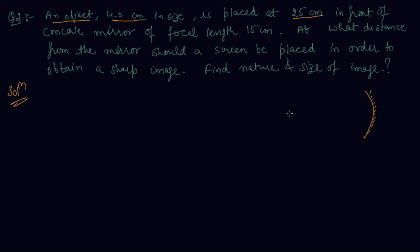The concave mirror has focal length of 15 centimeters and the object is placed between the focal length and center of curvature. At what distance from the mirror should a screen be placed to obtain a sharp image? U is negative 25 centimeters, H is 4 centimeters, and F is minus 15 centimeters.